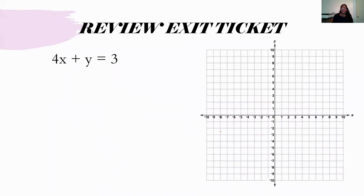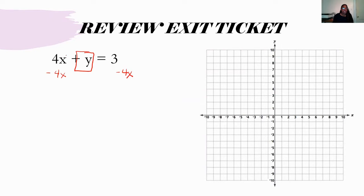Before we get started, we're going to review the exit ticket we left off with last time. We have to go from standard form to slope-intercept form. In order to do that, we need to solve the equation for Y. Y is going to stay right where it is, and then for this 4X, I have to do the inverse operation, which is subtracting 4X on both sides. 4X minus 4X gives me zero, and I can write it out as negative 4X plus 3.